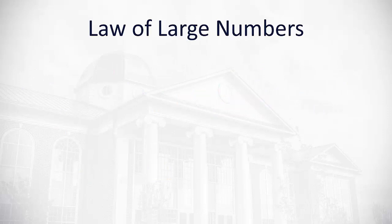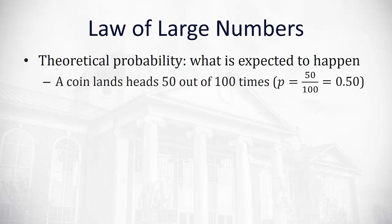We have what's called the law of large numbers that works with probability. First, we need to understand two different types of probability. The first type is theoretical probability — it's based on what's expected to happen. We expect a coin to land heads about 50 out of 100 times, so theoretically, the probability of heads is 50 out of 100, or 0.5.